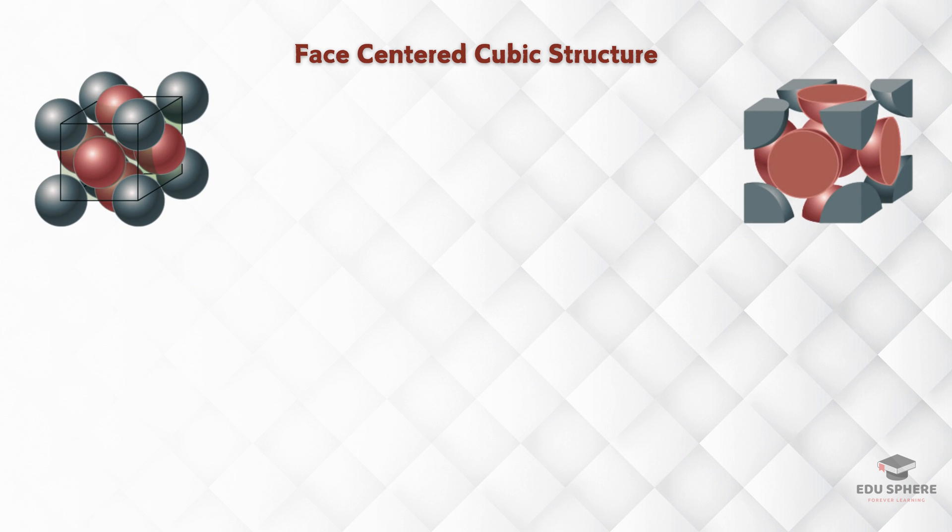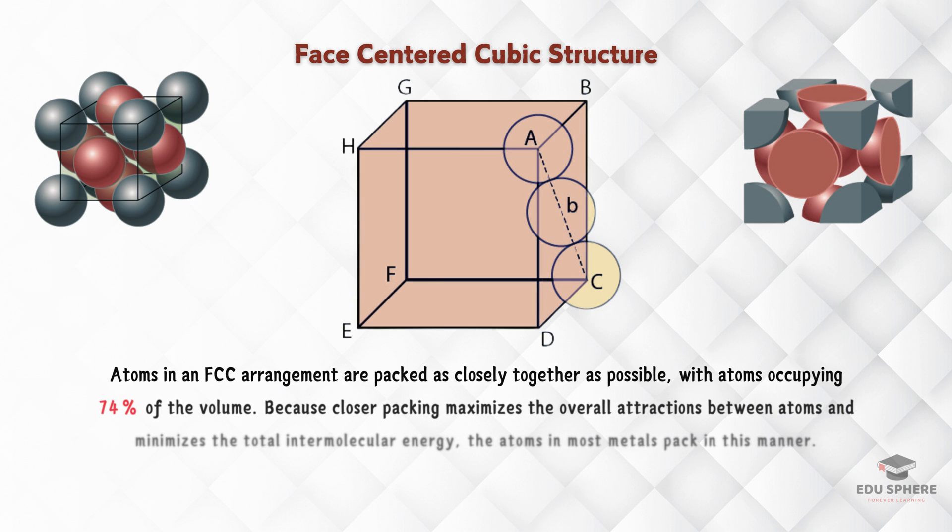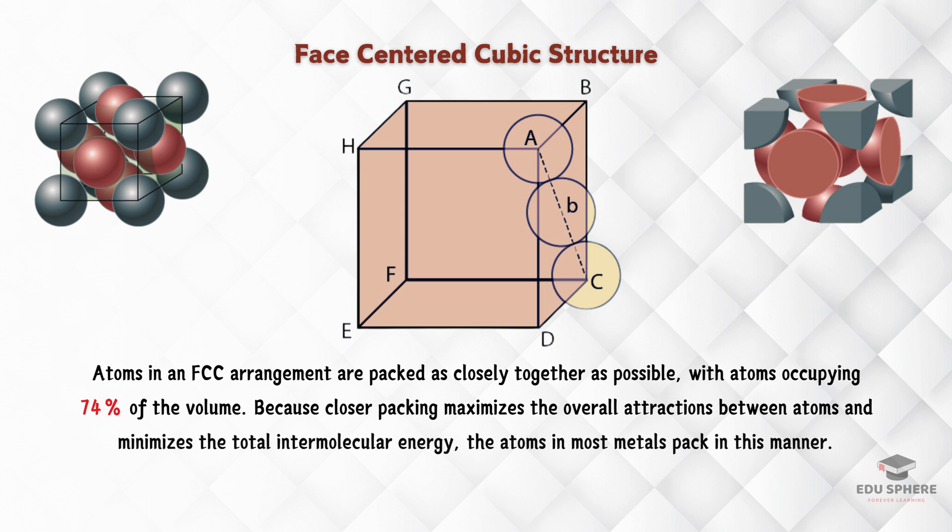In an FCC structure, the atoms fill up a whopping 74% of the space, compared to only 68% in BCC. That extra closeness makes the atoms super attracted to each other, which is why many metals like aluminum, copper, and lead use this FCC structure.